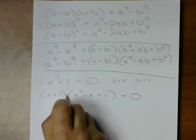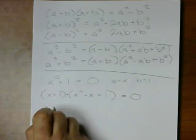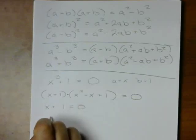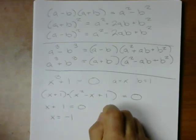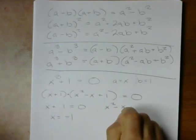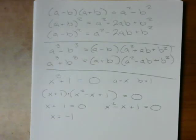So, I can definitely see that this is going to be 0 when this piece or this piece is 0. So, that's going to be 1 possibility. But this is also going to be 0 whenever we have x squared minus x plus 1 is equal to 0.